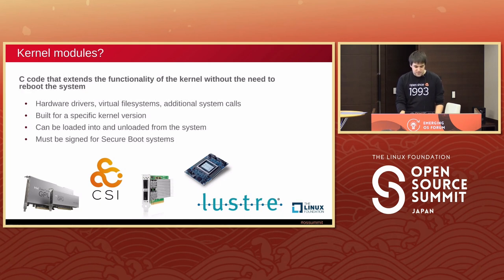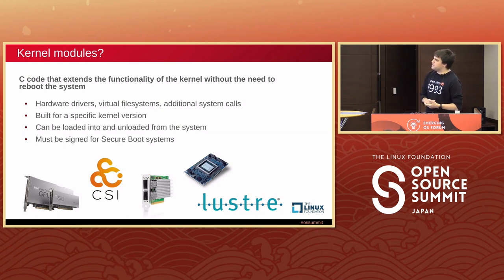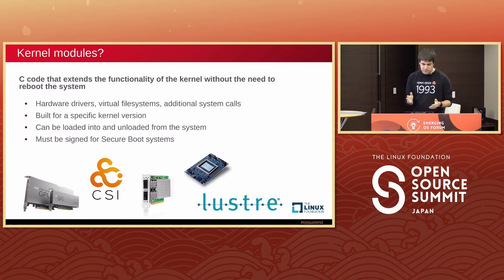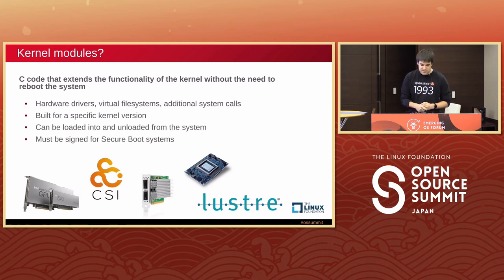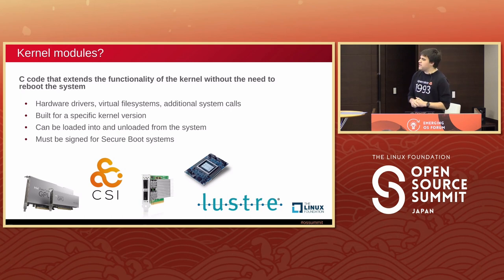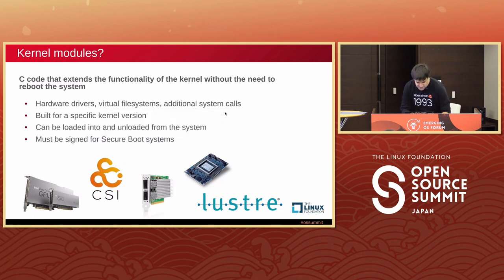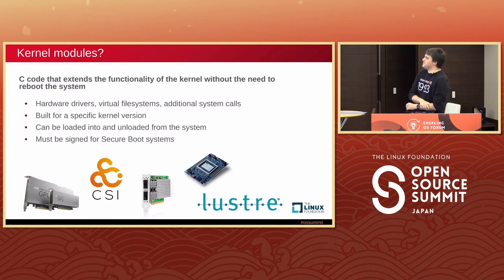A kernel module is a piece of C code that extends the functionality of the kernel without having to reboot the system. The point of a kernel module is that it is modular — you can load it and unload it at will. The most common use cases are hardware drivers, virtual file systems, and you can also add additional system calls. What makes them tricky is that they have to be built against a very specific kernel version — technically an ABI — and you need to rebuild your kernel module each time your kernel changes.